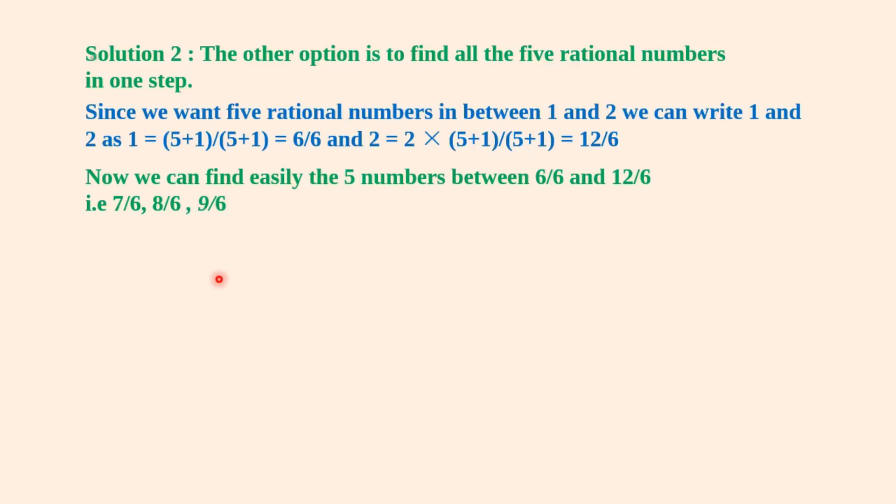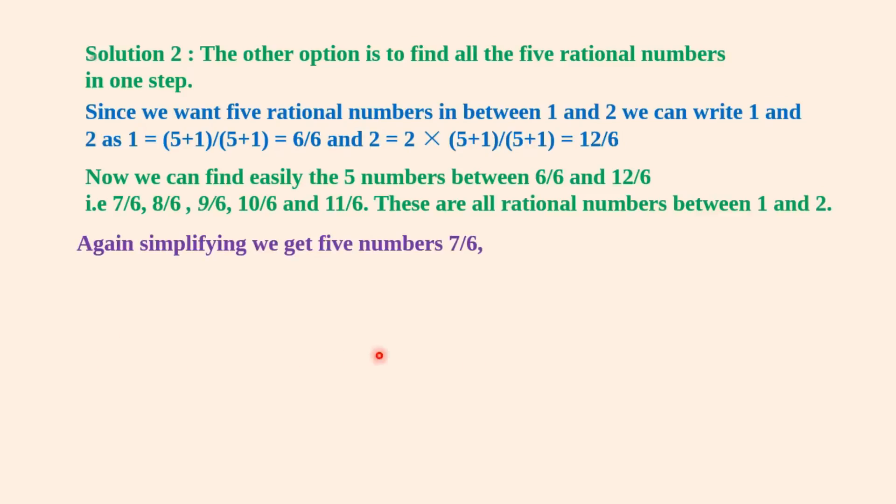That is 7/6, 8/6, 9/6, 10/6, and 11/6. These are all rational numbers between 1 and 2. Again simplifying, we get five numbers: 7/6, 4/3, 3/2, 5/3, and 11/6.